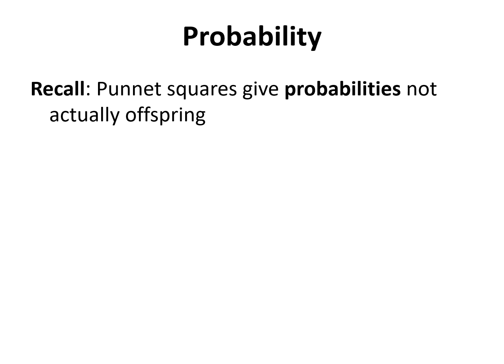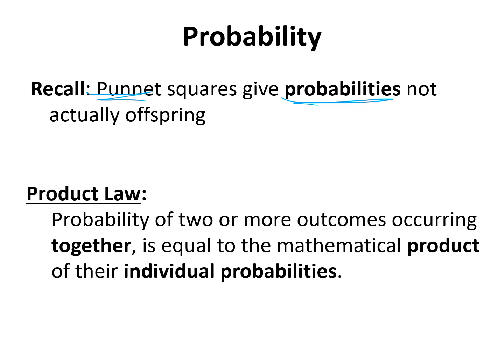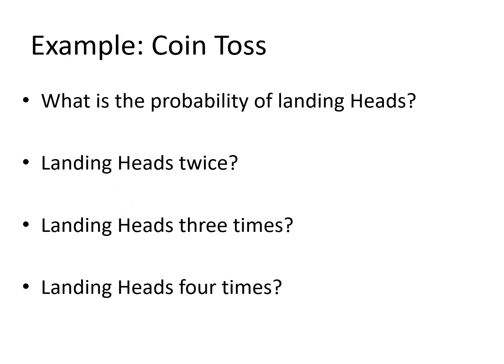A quick note about probabilities: when two pea plants are bred, it's not that you get exactly four or 16 offspring — we are talking about probabilities. These Punnett squares do not tell us what is going to be produced; they merely give us the probabilities of what is going to be produced. The product law can be handy here for calculating the chances of two or more outcomes occurring.